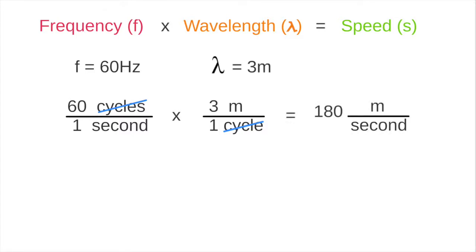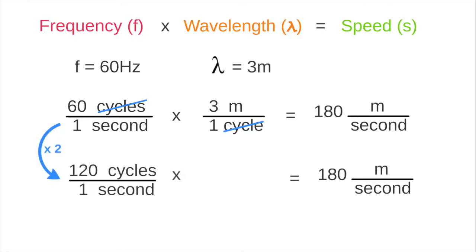To see why a constant product is an inverse function, just look at what happens to the wavelength when we keep the speed of the wave constant but double the frequency. The speed stays the same at 180 meters per second. Doubling the frequency gives 120 cycles per second. So the wavelength must get cut in half to 1.5 meters per second, because the product of 120 times 1.5 gives 180.